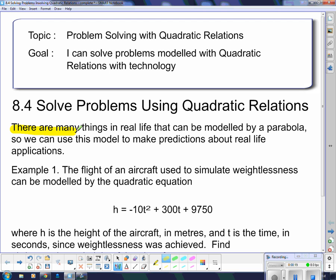There are many things in real life that can be modeled by a parabola, so we can use this model to make predictions about real life applications. And so here's our first example. The flight of an aircraft used to simulate weightlessness can be modeled by a quadratic equation. And here's the quadratic equation that we have down here. H equals negative T squared plus 300T plus 9,750.